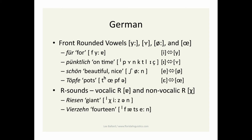German has two kinds of R's: vocalic R at the end of syllables, and non-vocalic R at the beginning. 'Riesen' means giant, and 'vierzehn' means fourteen. In 'vierzehn,' at least in my non-native idiolect of German, the R creates a diphthong after the high, lax, unrounded vowel I — 'vierzehn.'